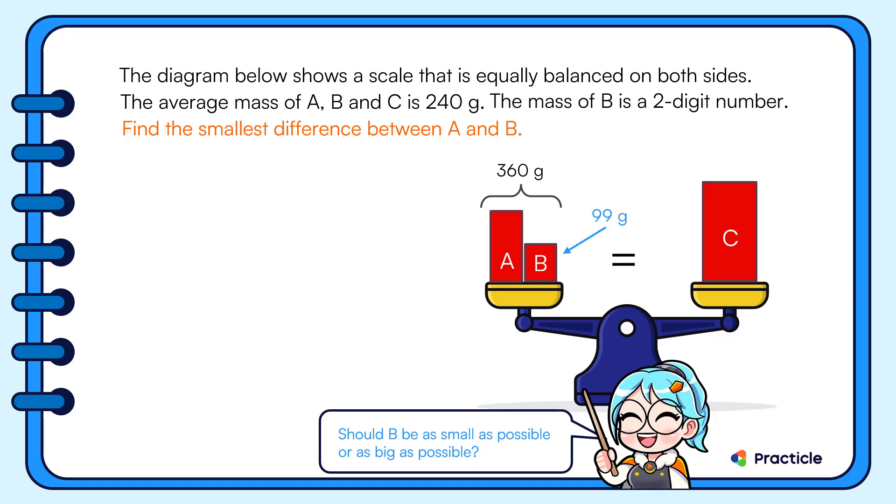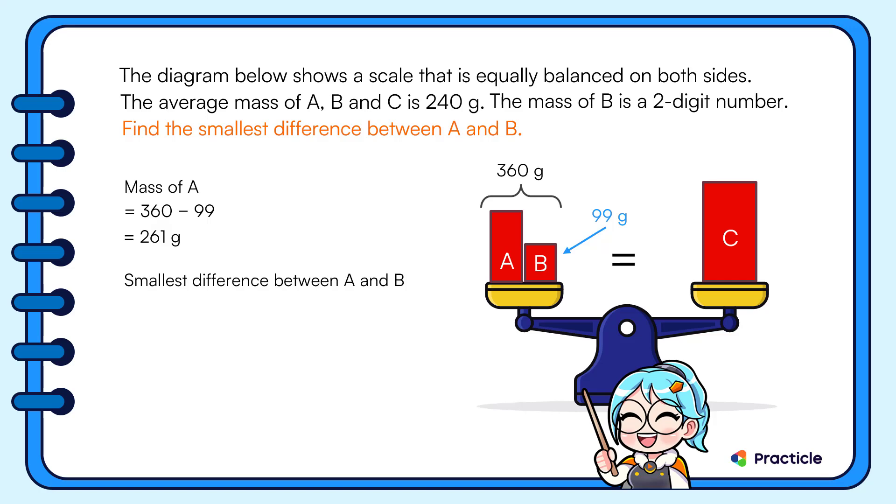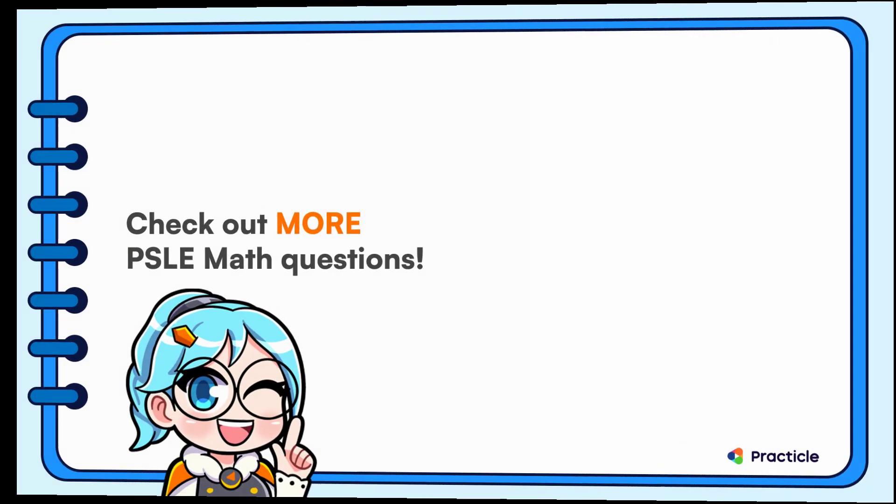We know that A and B have a total mass of 360 grams. If B is 99 grams, we can find how heavy A is quite easily. Agree? All we need to do is to take 360 minus 99. Did you get 261 grams? Now that we know the mass of A and the mass of B, are you ready to find the difference between them? When we subtract 99 from 261, we are going to get an answer of 162 grams. Were you able to solve this PSLE math question?